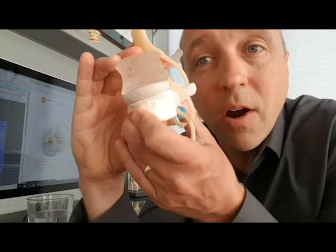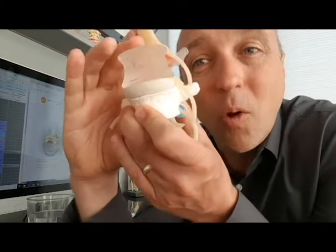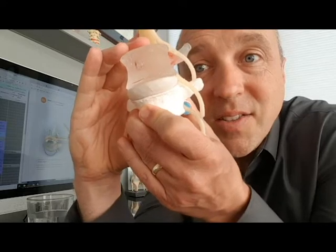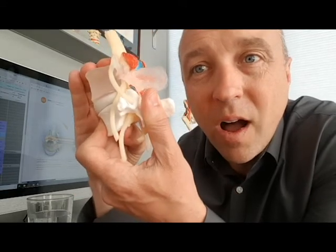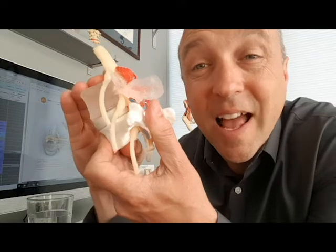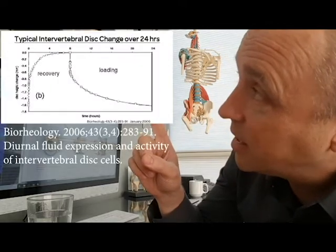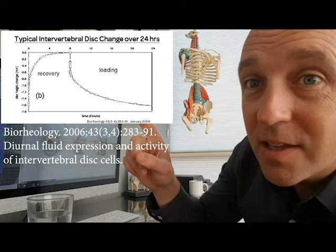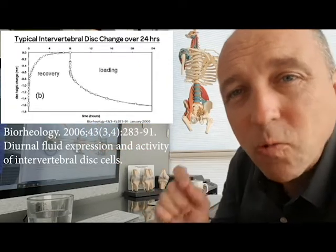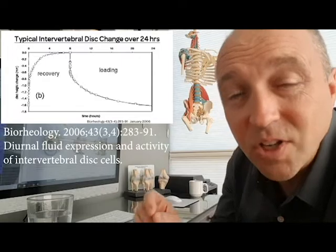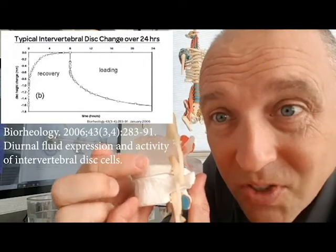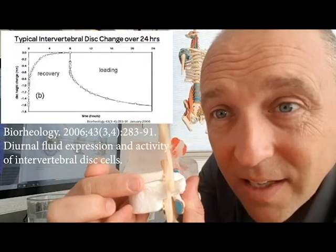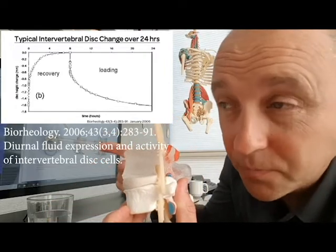There are times in the day and night cycle where the disc is more unstable with less stiffness. If you look at bioreology, you can see here a 24-hour graph showing the rate of height change, measured in millimeters over a 24-hour period.